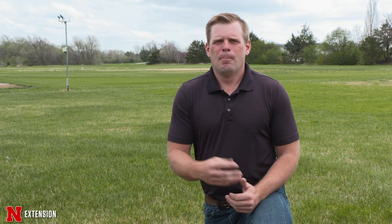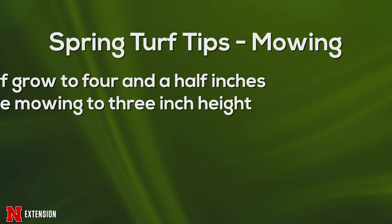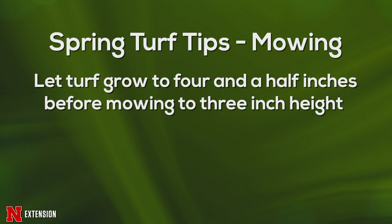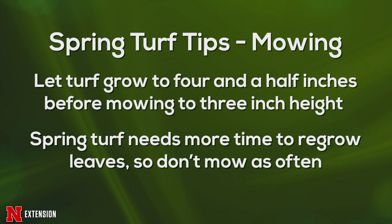Mowing: let's mow when the grass tells us we need to mow. Ideally, we want to be mowing to about three inches — let the grass go to about four and a half inches, then mow. In the summertime, an ideal growth rate would be about once a week, so you want to be growing about one and a half new inches of leaves a week. In the spring it takes time for those leaves to grow, so it might be two to three weeks between those first mowings. Later in the spring the grass will grow like crazy and you might need to mow more than weekly.